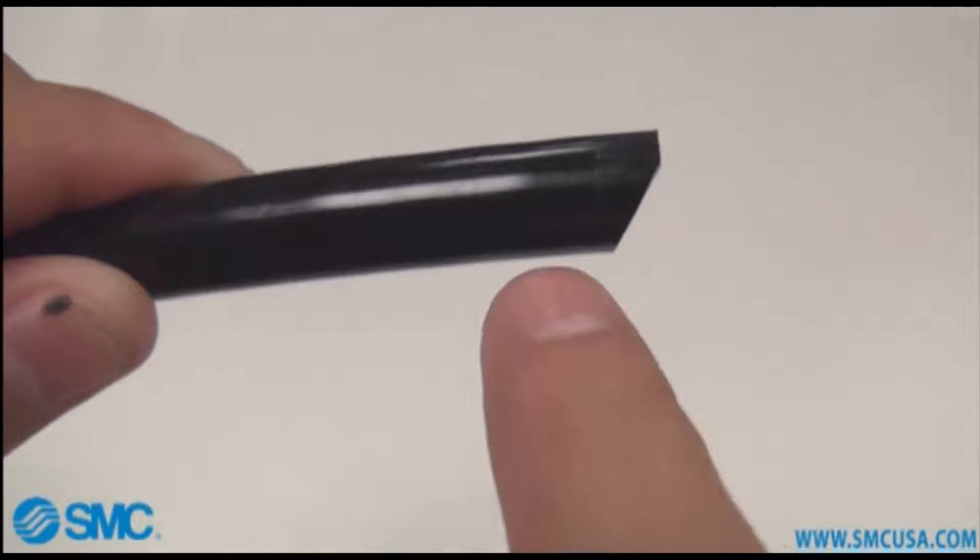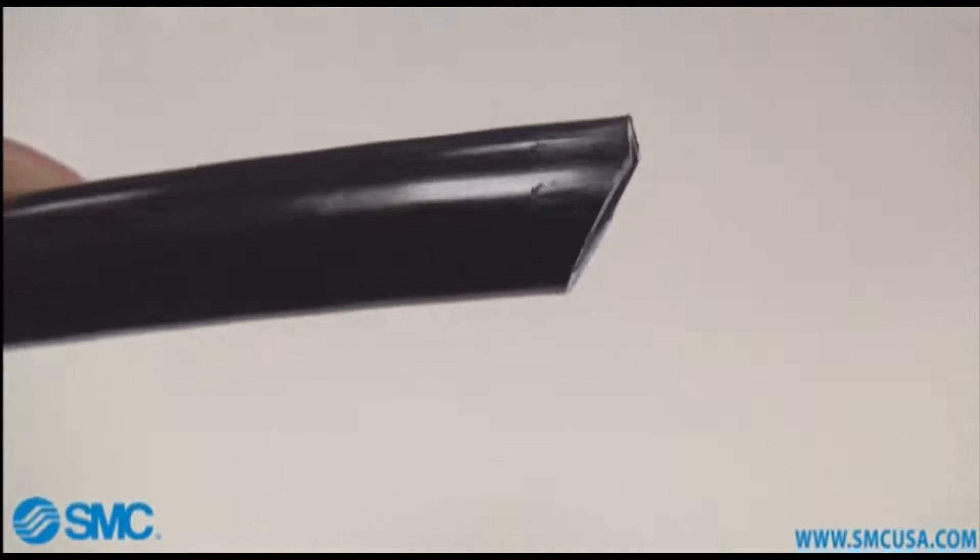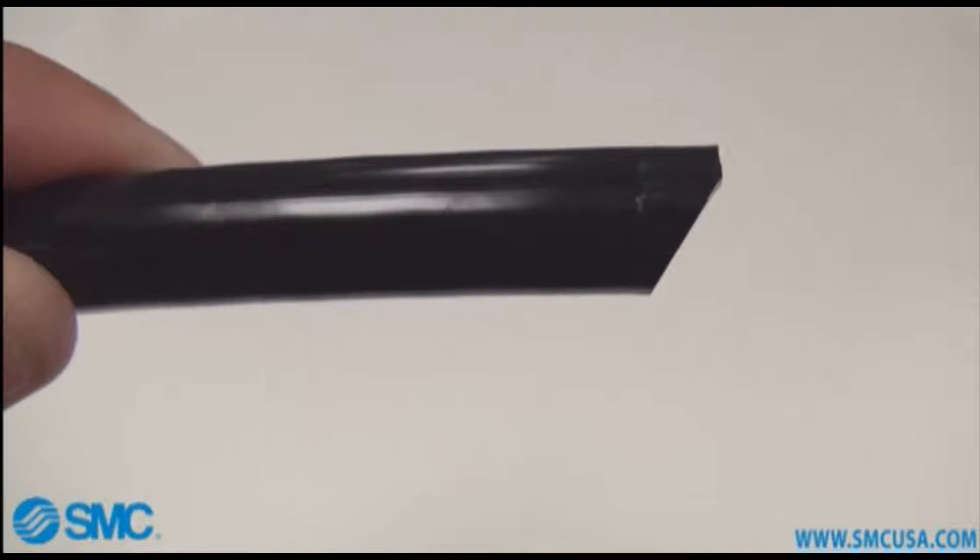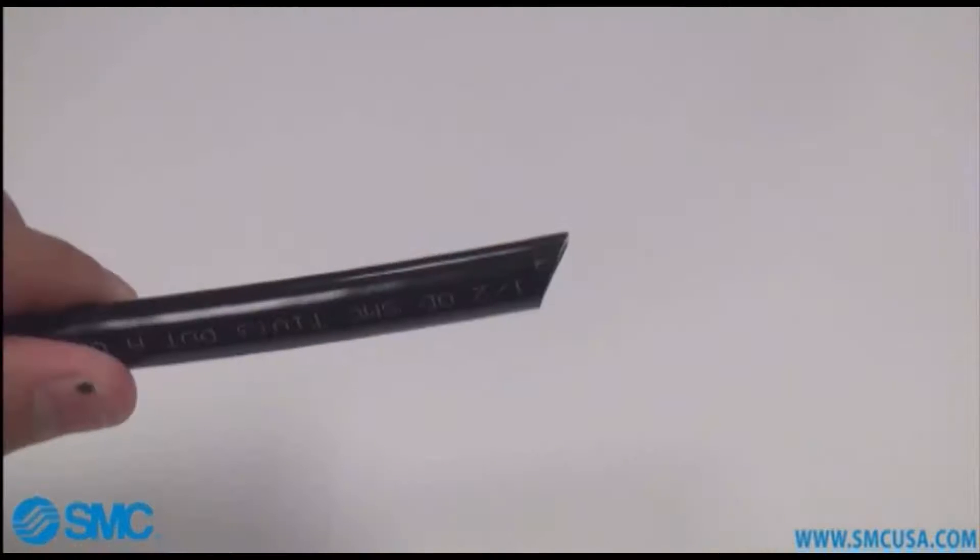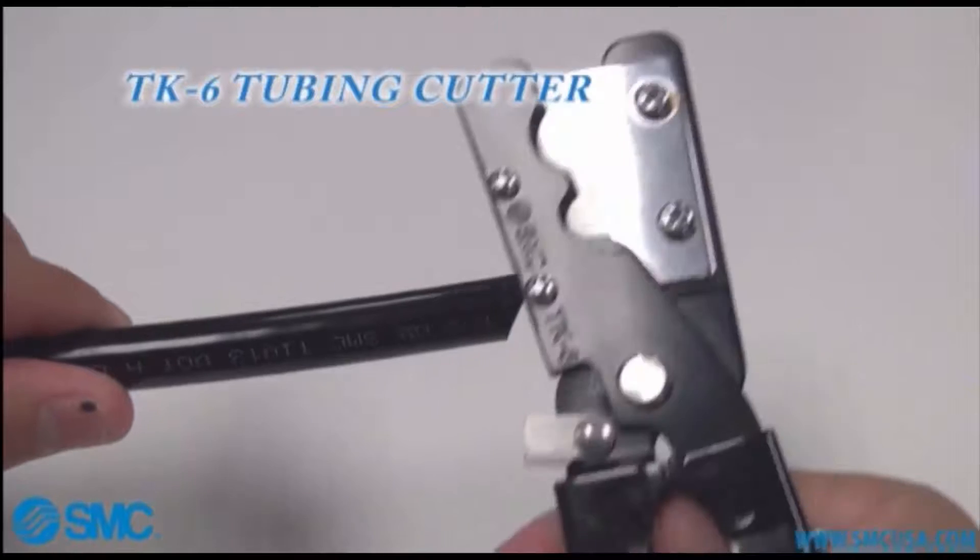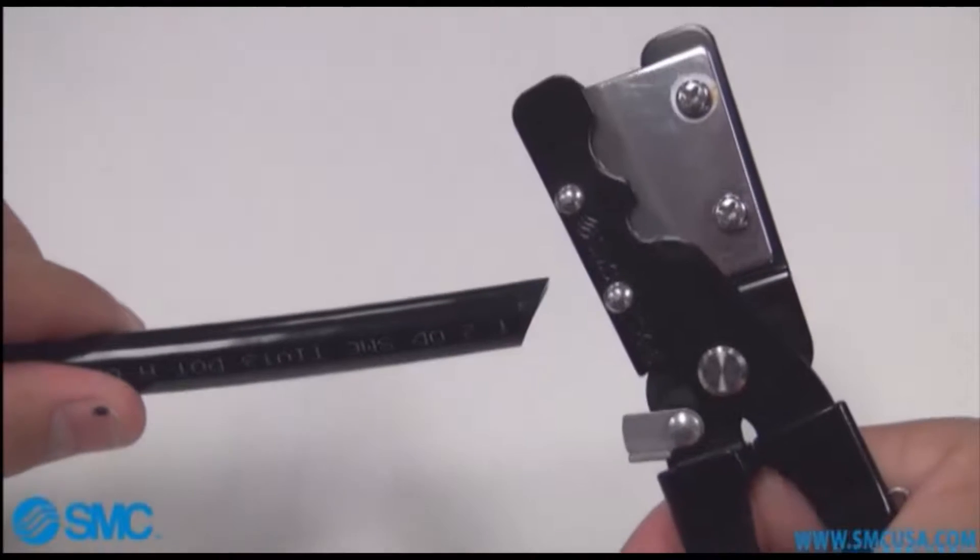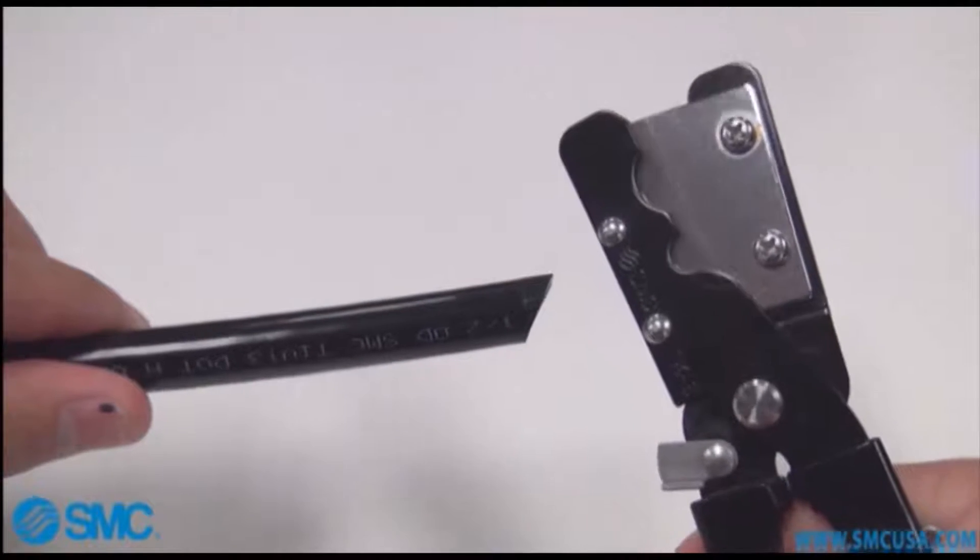As you can see we have a piece of TIV series tubing that has deep scratches in it and the end has not been cut square. You can use SMC series TK6 tubing cutters or equivalent to properly cut the tubing.